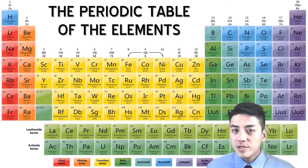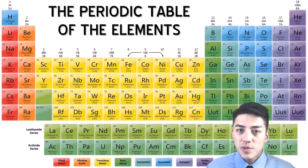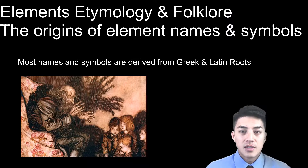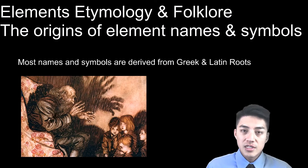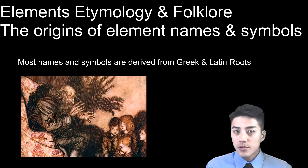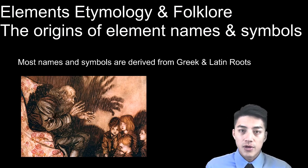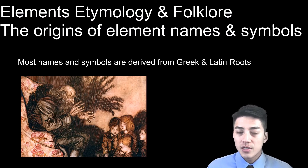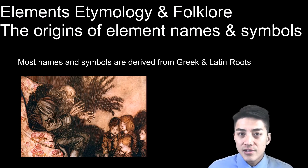I'm going to go into a lesson called elements etymology, which is basically the names and the origins of these symbols of the elements on the periodic table. Now I won't go into every single detail and history behind every single element — some of them are pretty straightforward — but the point of this lesson is to give you some history, some origins, and maybe some folklore behind some of the elements I find more interesting on the periodic table. Let's get right into it.